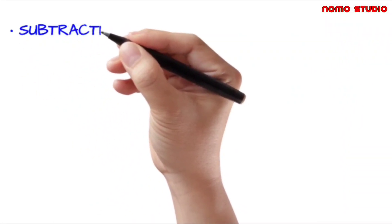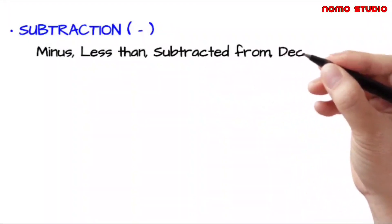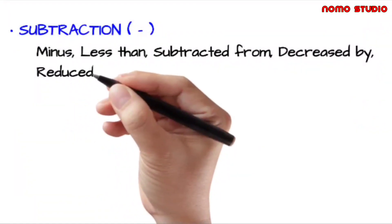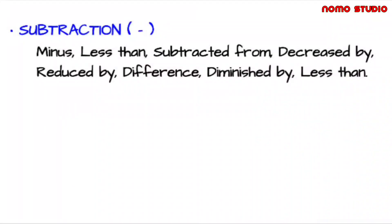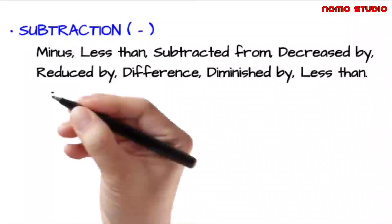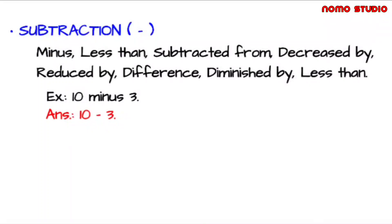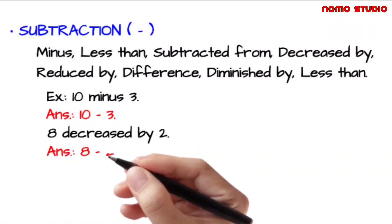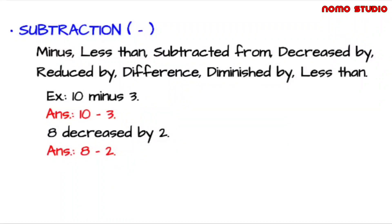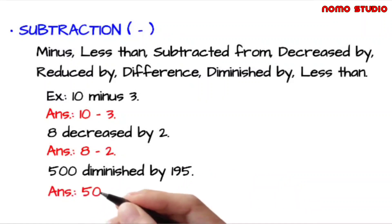Next is subtraction. Commonly used English terms are: minus, less than, subtracted from, decreased by, reduced by, difference, diminished by, and so on. For example, 10 minus 3 is simply written as 10 minus 3. Eight decreased by 2 is simply 8 minus 2. And 500 diminished by 195 is simply 500 minus 195.